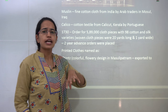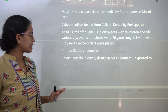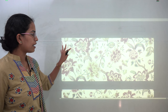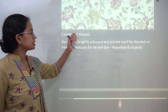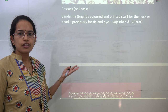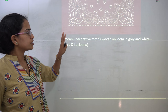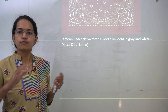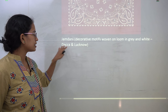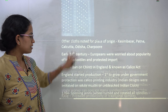India's position was predominant in the world for cotton and textile during that time. Other common printed cloths included chintz, which featured flowery designs, coasses or khasa, and bandana — scarves that were tie-and-dye products from Rajasthan and Gujarat. Jamdani art was common in loom work, mainly in grey and white colour, popularly done in the areas of Dhaka and Lucknow.